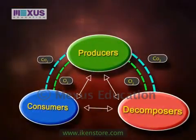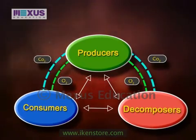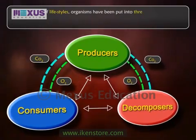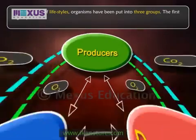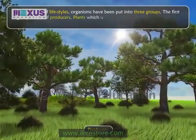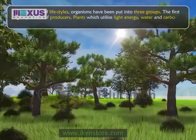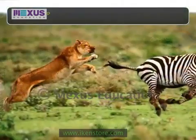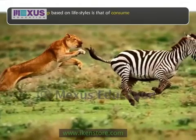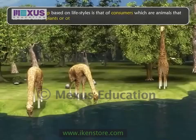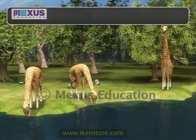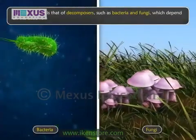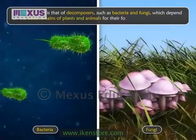The fourth factor considered while making this five-kingdom system is the lifestyle. On the basis of lifestyles, organisms have been put into three groups. The first group is that of producers — plants which utilize light energy, water, and carbon dioxide to synthesize their organic food. The second group is that of consumers, which are animals that consume either plants or other animals to survive. The third group is that of decomposers, such as bacteria and fungi, which depend on the dead remains of plants and animals for their food and decompose them.